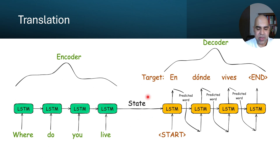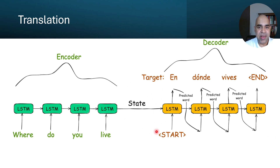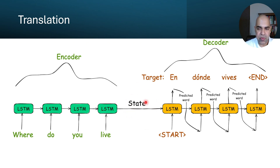This context vector is a fixed-length vector for any input sentence of any length. The decoder knows how to decode using this. In a typical LSTM-based encoder-decoder architecture, the encoder's final hidden state and final cell state are used to initialize the decoder's hidden state and cell state. That is, the encoder's final hidden and cell states together form the context for the decoder.